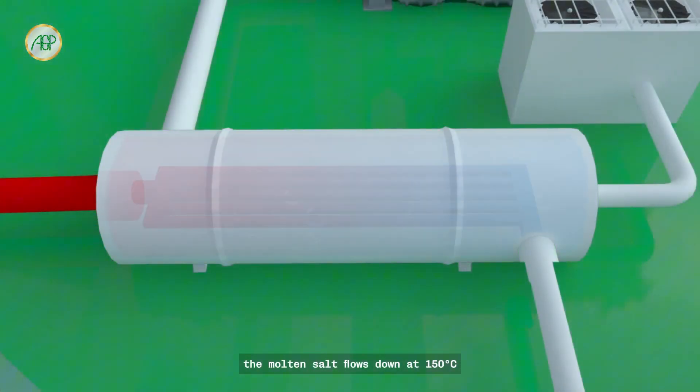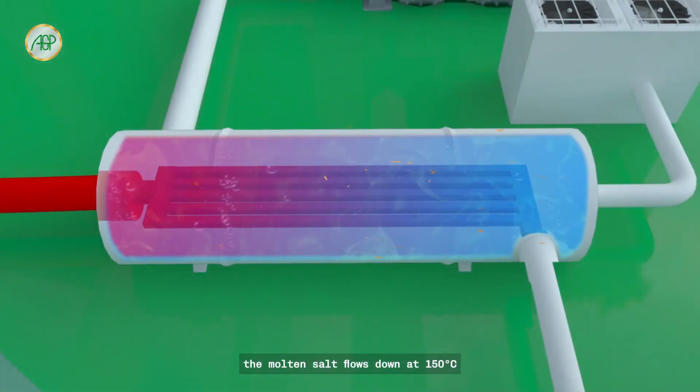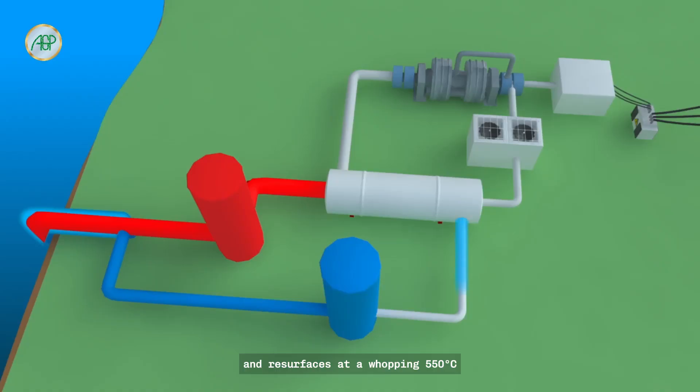The molten salt flows down at 150 Celsius and resurfaces at a whopping 550 Celsius. AGP's system has a robust convective thermocycle, greatly reducing pumping requirements. Molten salt's long-term thermal energy storage capability enhances system reliability and versatility.